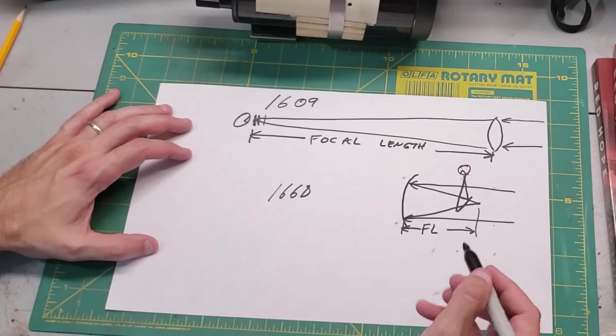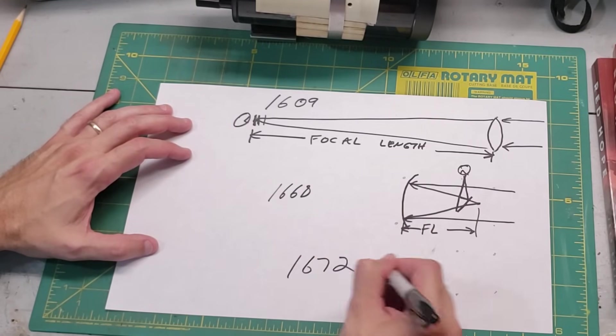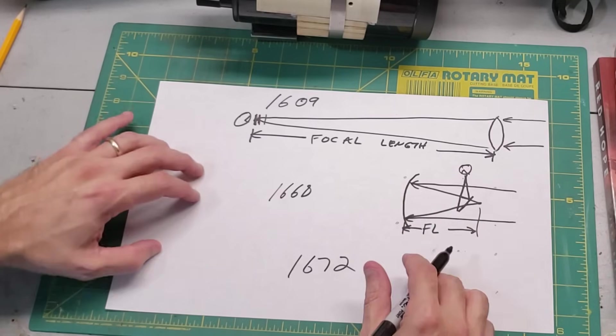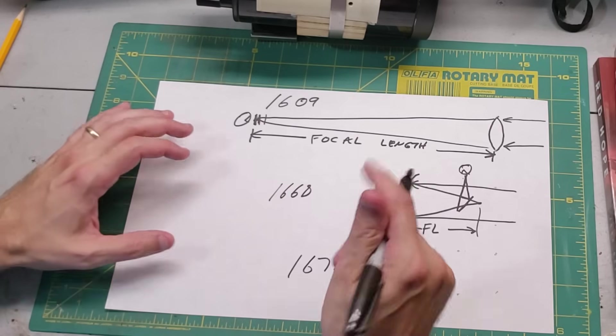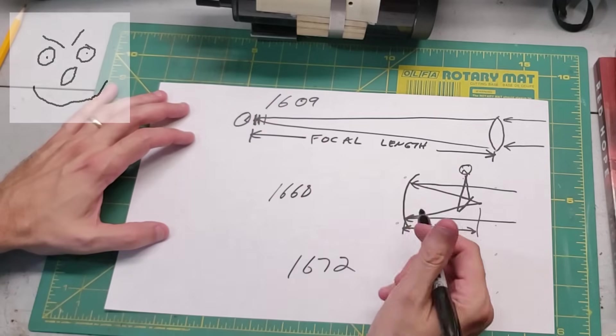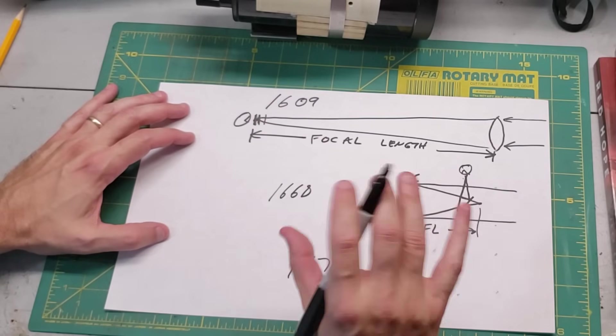Just four years later, around 1672, that trend in stubbiness took another giant leap. A French teacher named Laurent Cassegrain invented his own style of reflector, a modification of Newton's. What he did was, he also used a mirror, but he modified it and drilled a hole in the back.